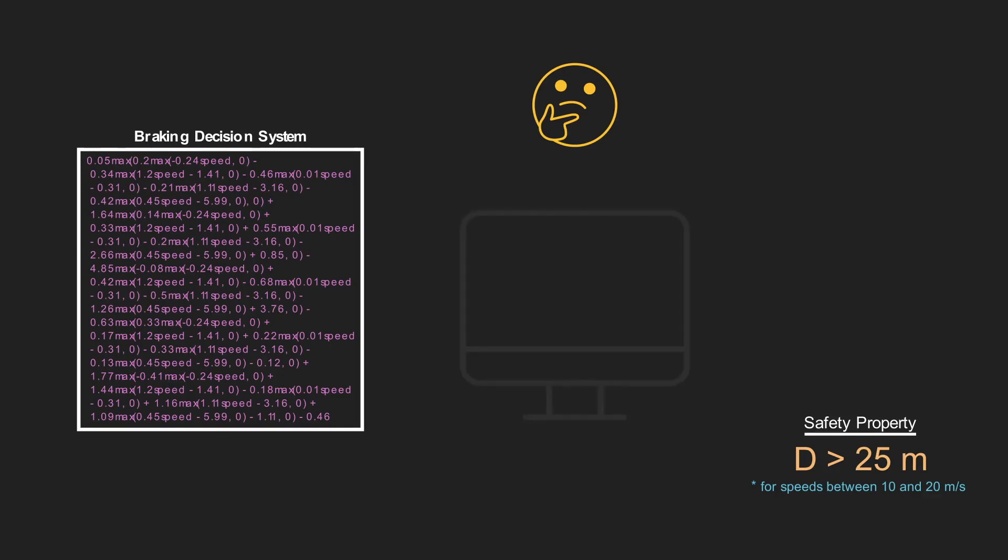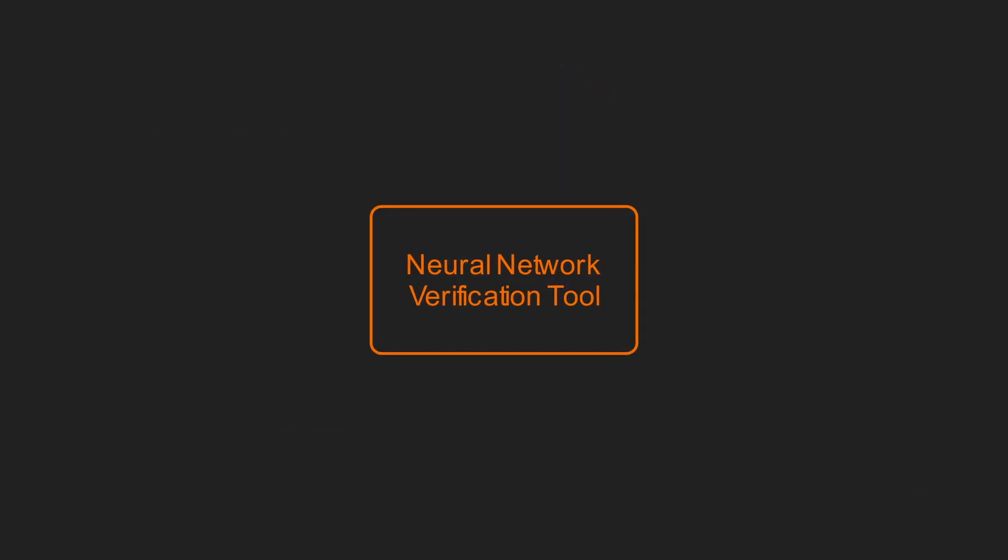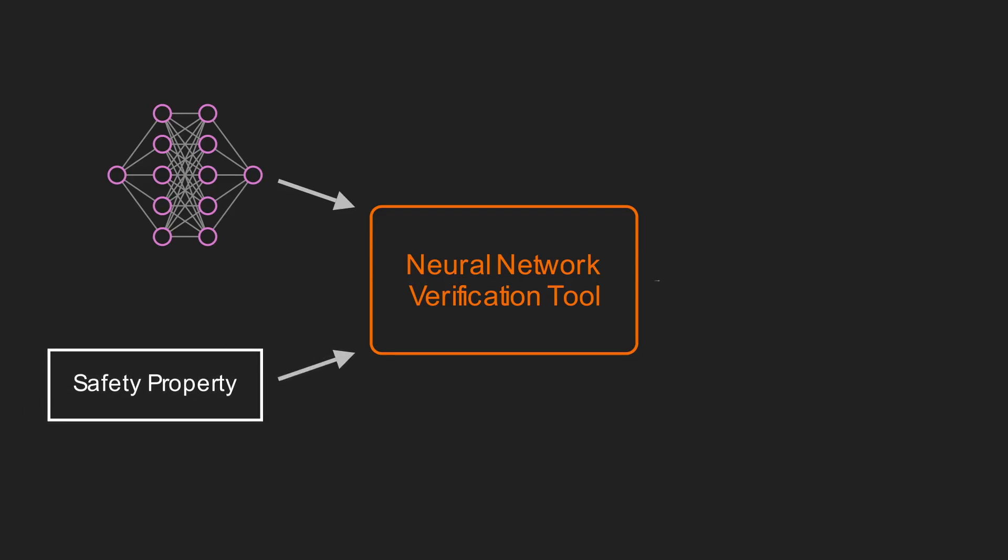What we can do though is program a computer to use various techniques in mathematics to do this reasoning for us. In fact, this is exactly what a neural network verification tool does. It can take in our network and safety property and automatically do this reasoning for us to determine if the property is satisfied. In general, neural network verification tools take as input a neural network and a safety property and output whether or not the property is satisfied.